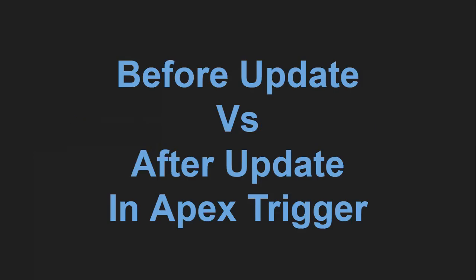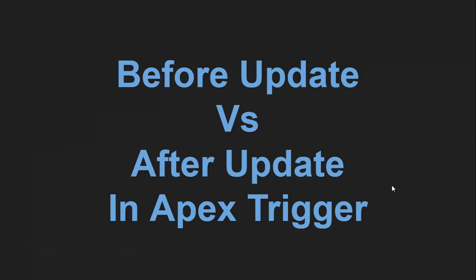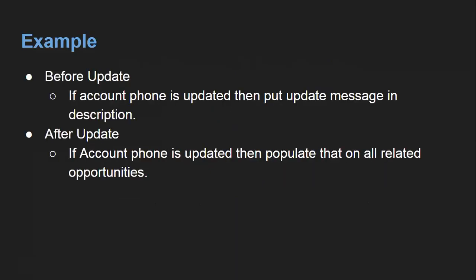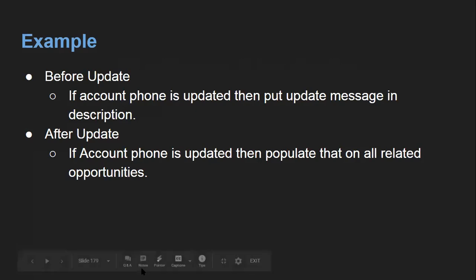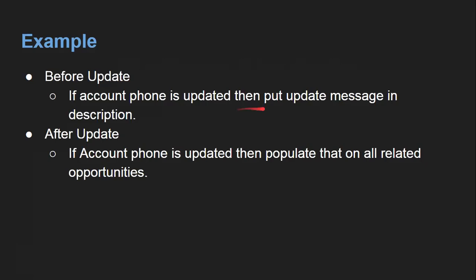In this video I am going to discuss and demonstrate how you can use before update and after update in an Apex trigger. In my previous video I demonstrated before insert and after insert. Here in this video there are two scenarios: before update and after update. First, take a look at before update — the scenario is: if account phone is updated, then put an update message in the description.